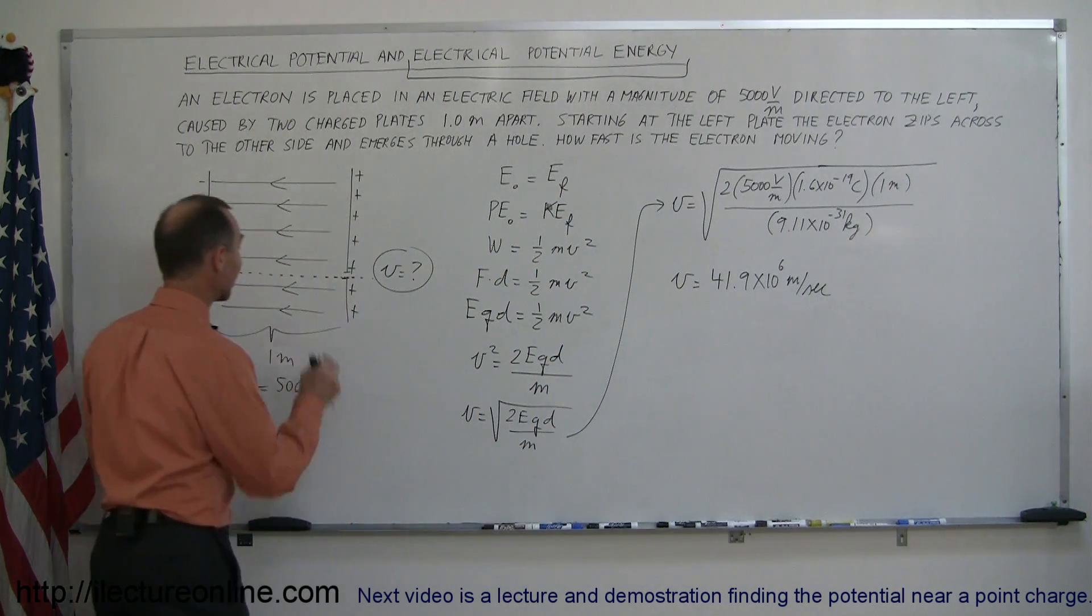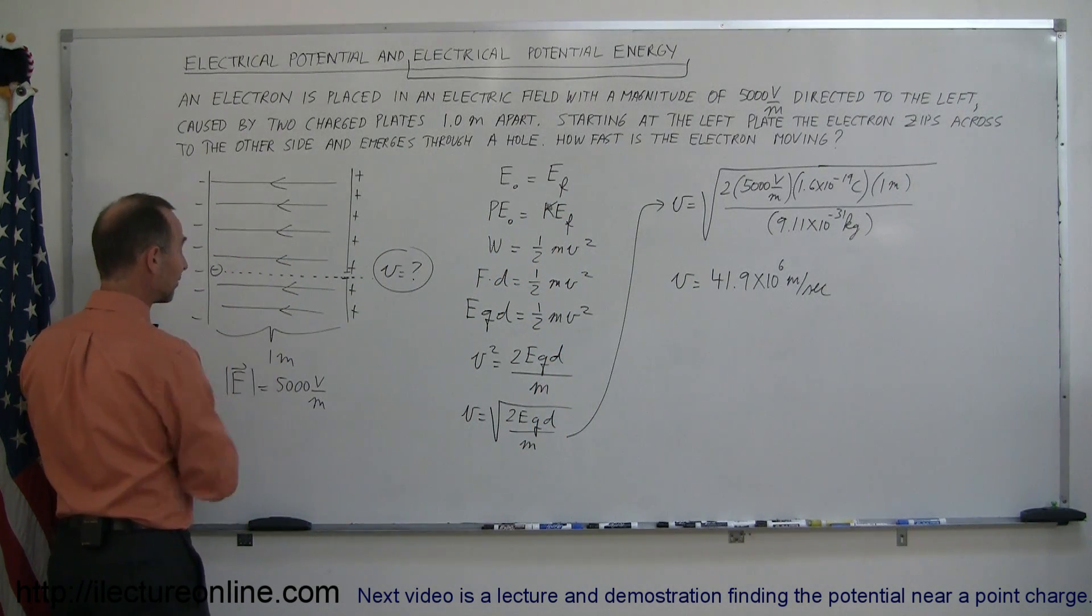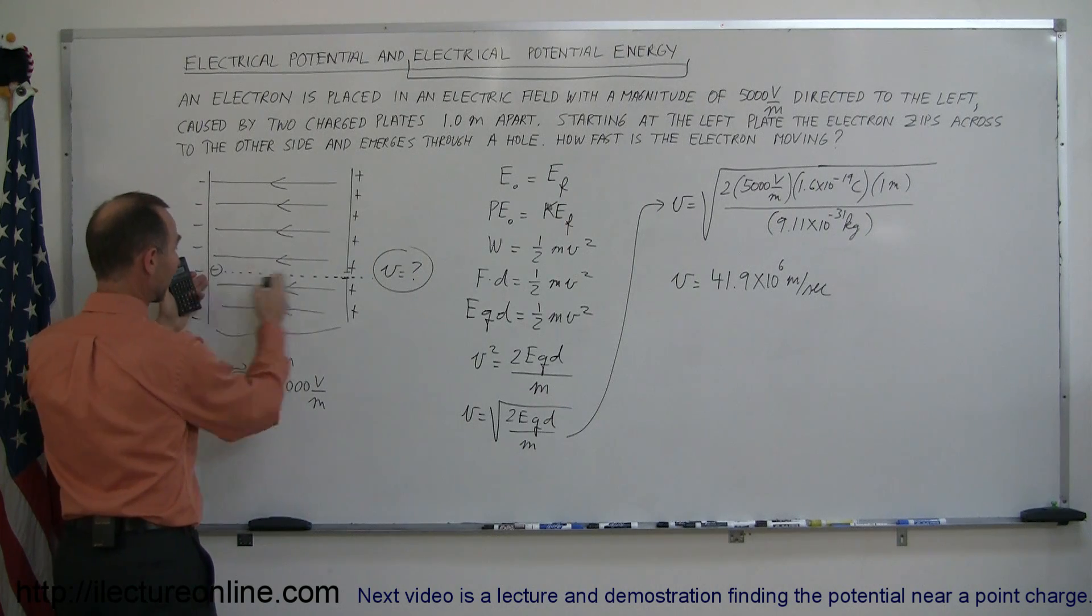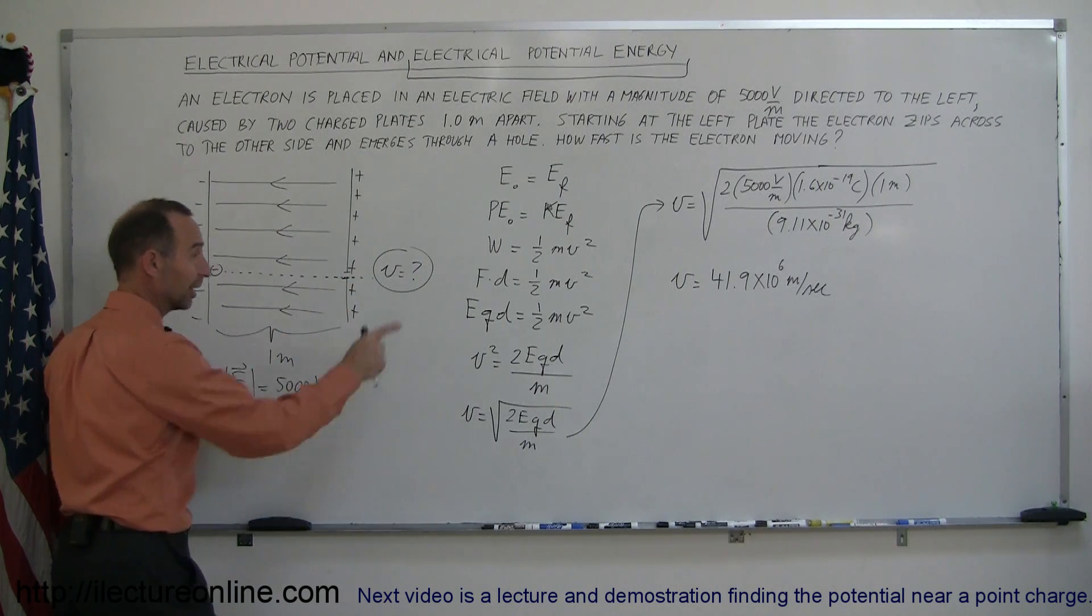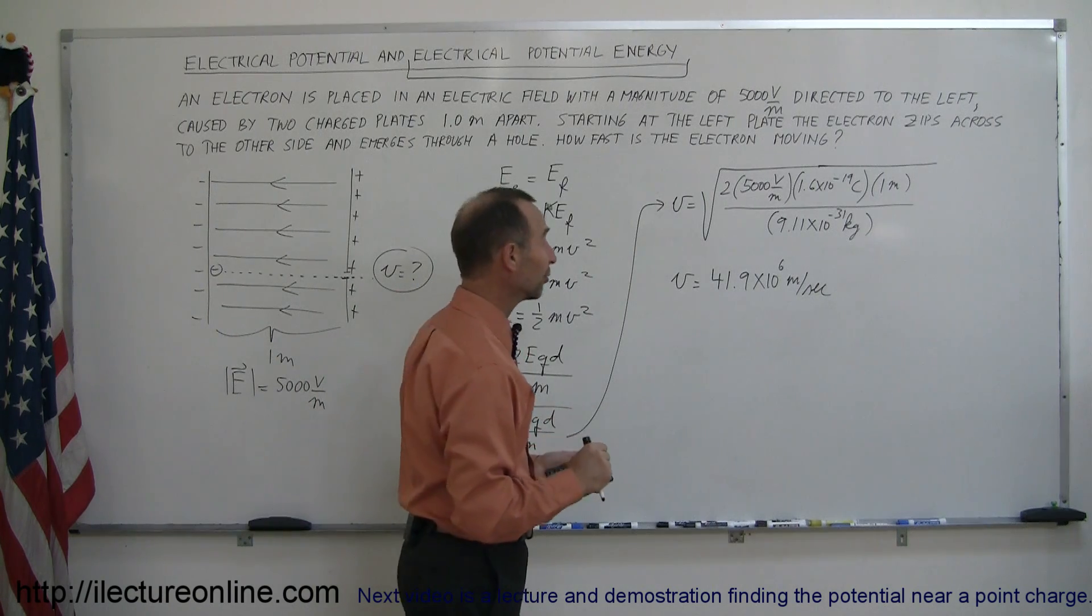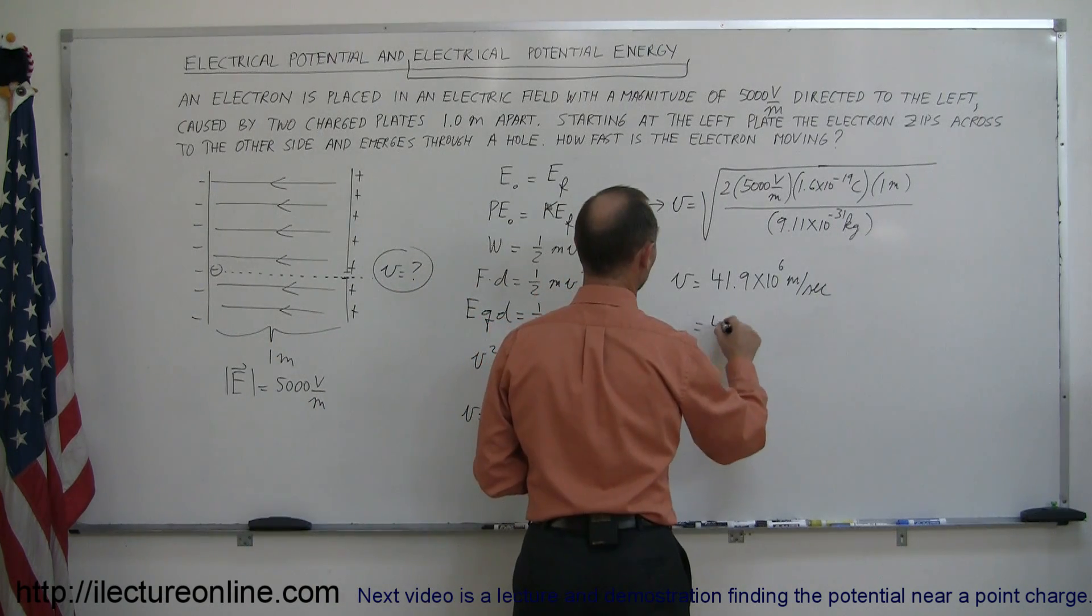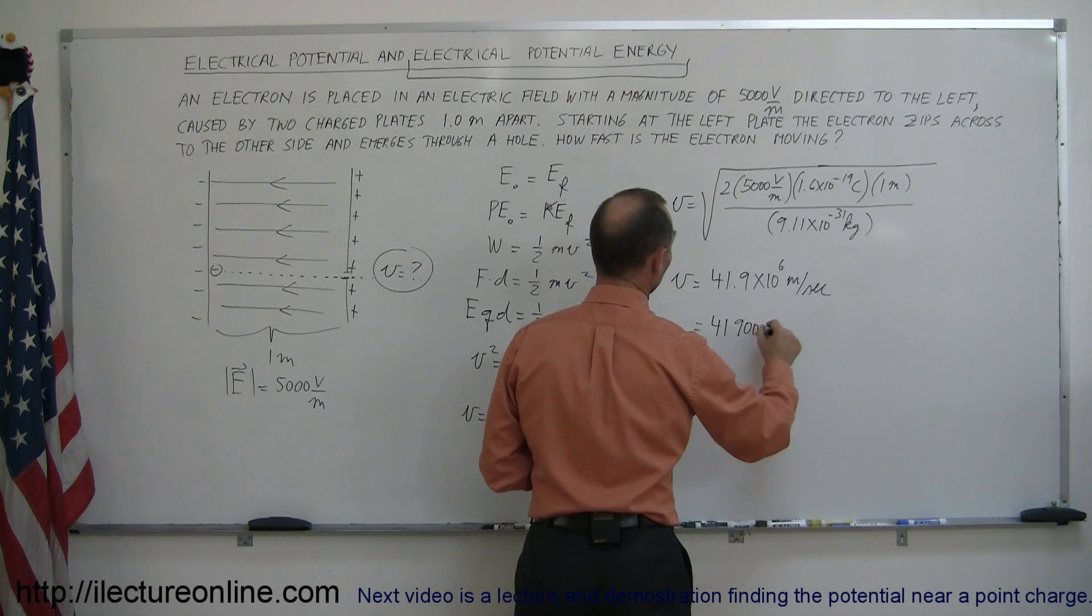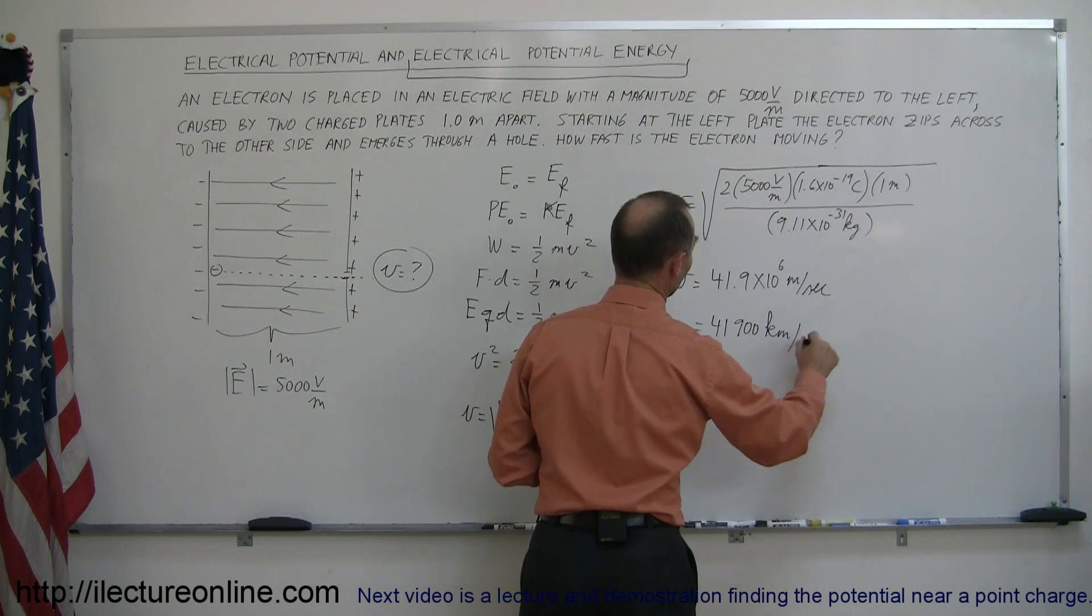So if an electron is situated in an electric field of 5,000 volts per meter and allowed to accelerate over a distance of one meter through the field it will emerge at a speed of 41.9 million meters per second which is the same as saying 41,900 kilometers per second. So that's quite fast.